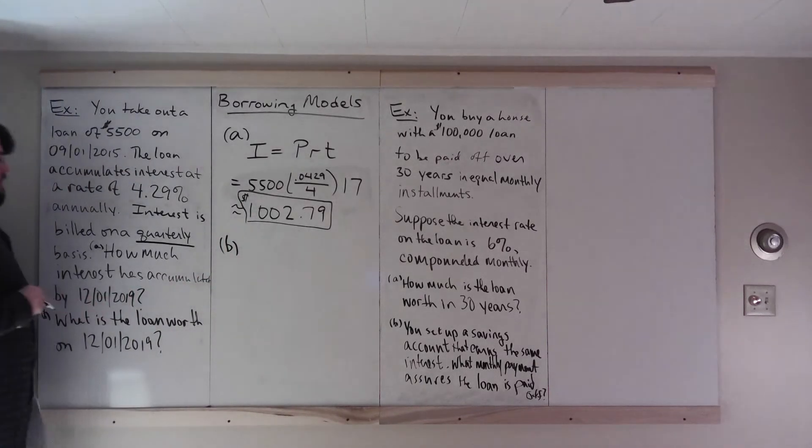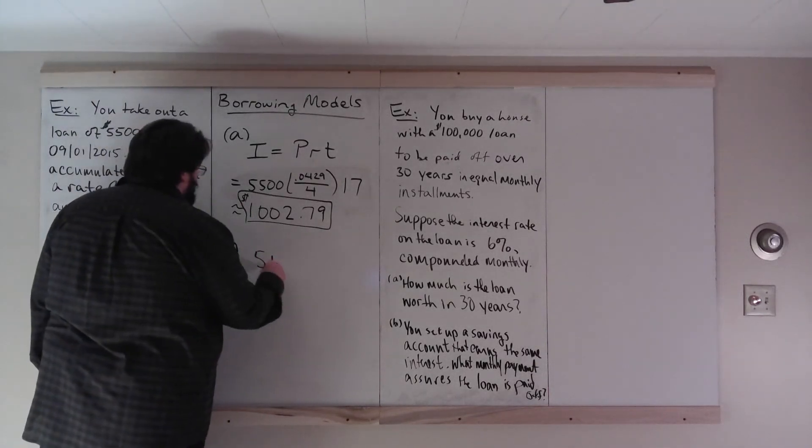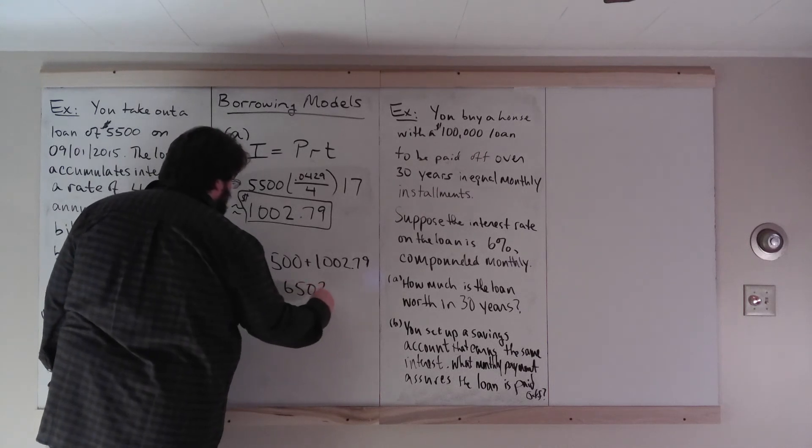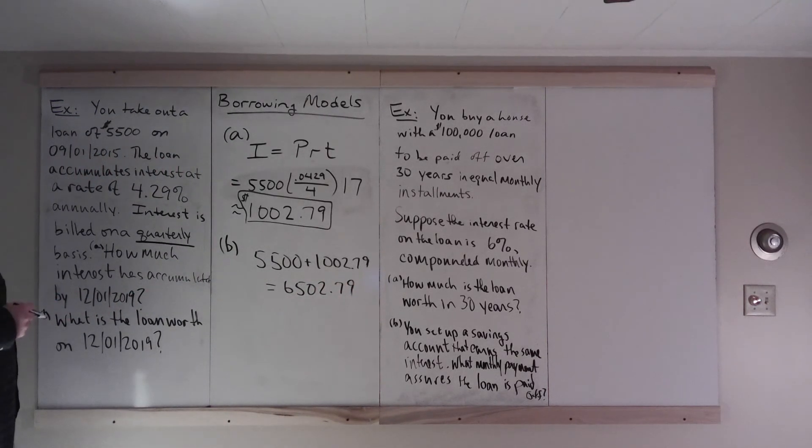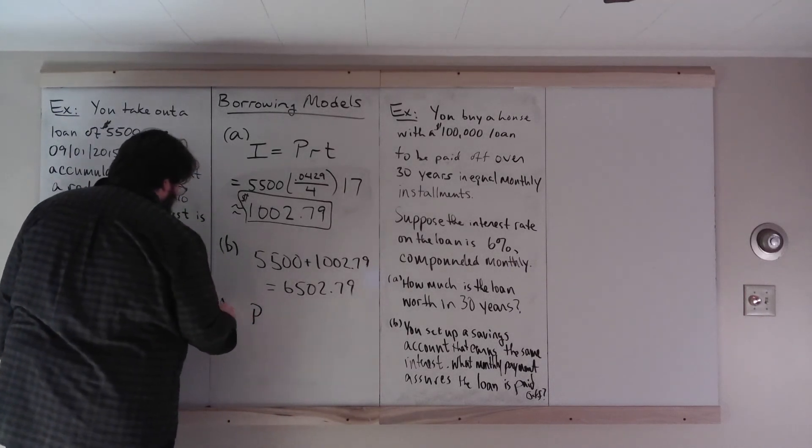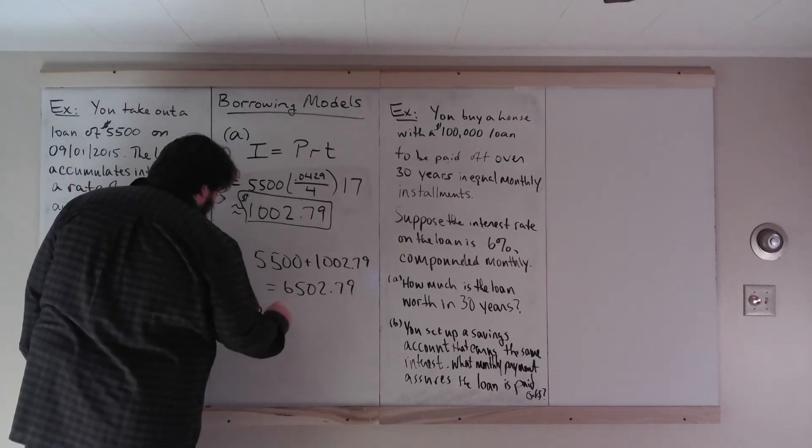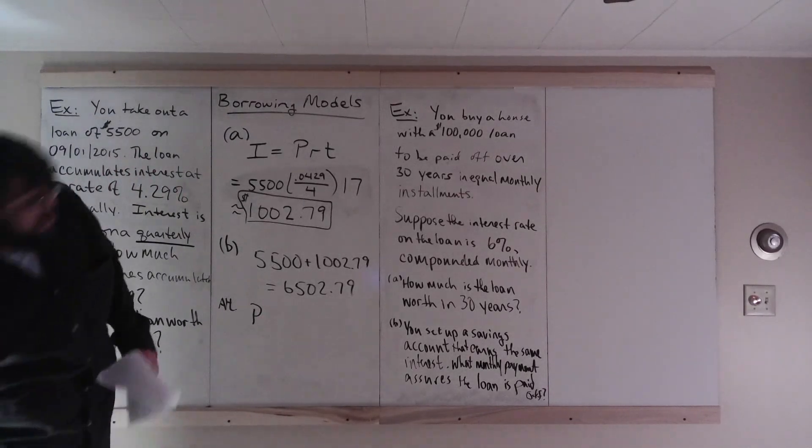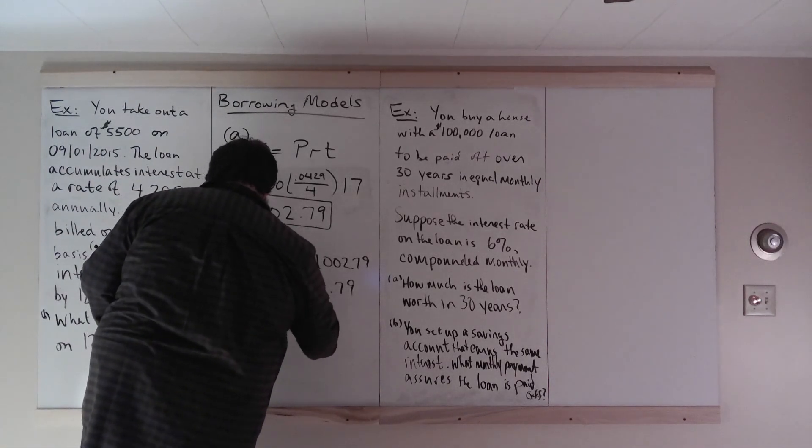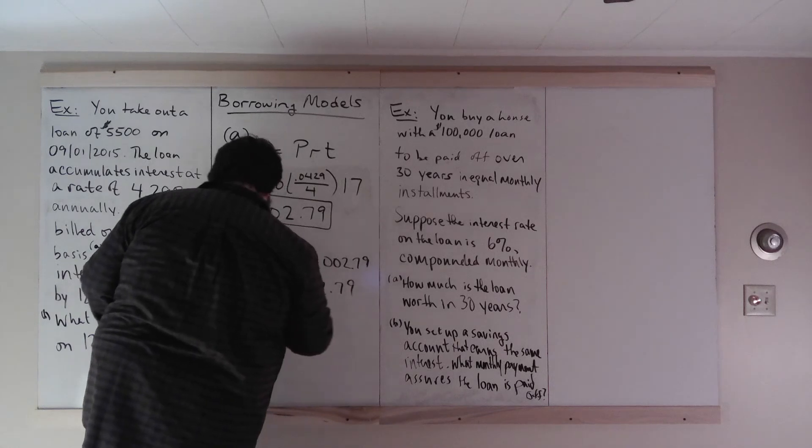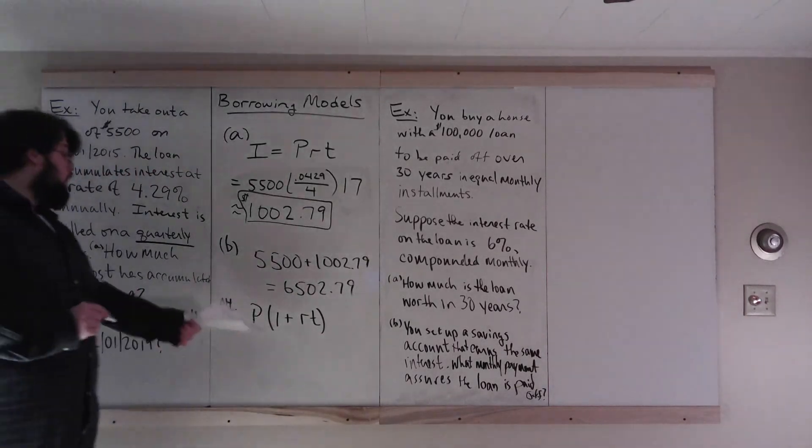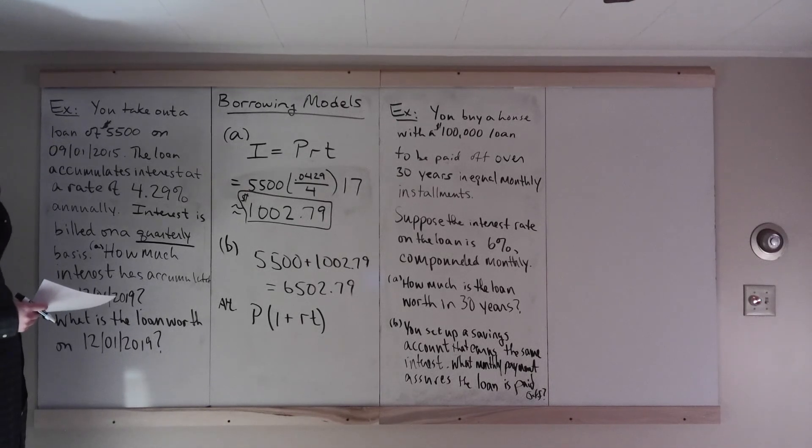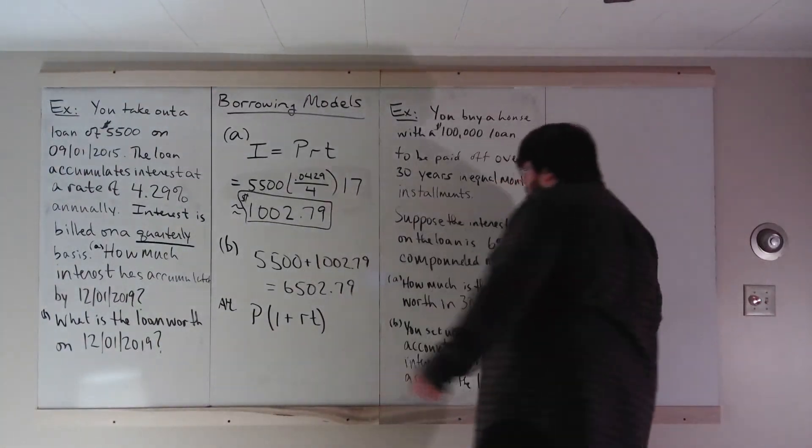And then what's the loan worth? Well, we already found the interest. So we can just do $5,500 plus $1,002.79 to make $6,502.79. If we didn't do that initial computation, you would just use, or you could just use the... I'll just say, if we didn't use that. So alternatively, A equals P times 1 plus RT.